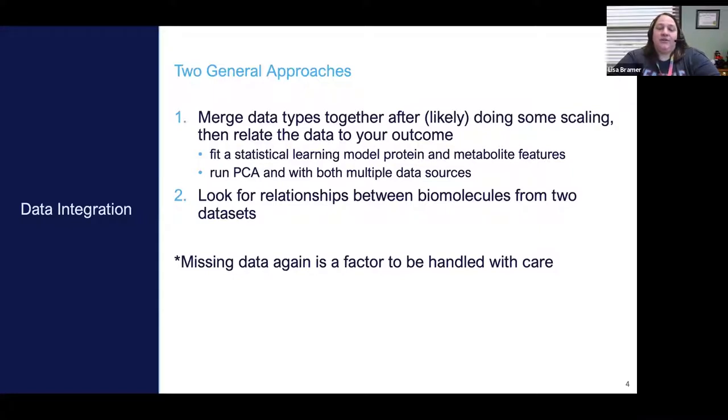So oftentimes we get all this data together, and we get all these spreadsheets, and it can feel like we're drowning in data. The question is, what kind of tools exist that can help us parse through that? There really are two general approaches to data integration. One is we can try to merge data types together, for example, proteomics and metabolomics. Just putting those two data frames together, binding them, so you've got data across both data types for each sample. This would be done after normalization steps and perhaps some additional scaling.